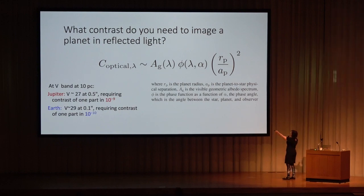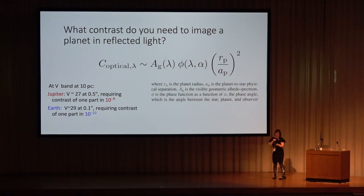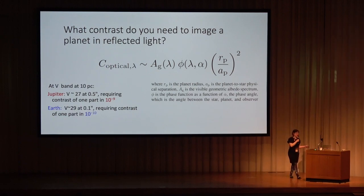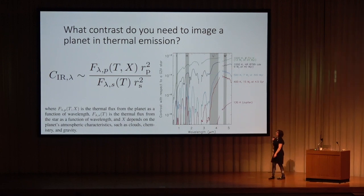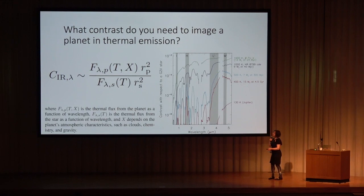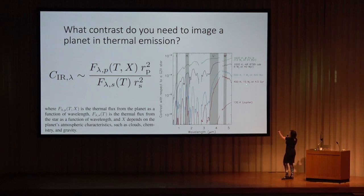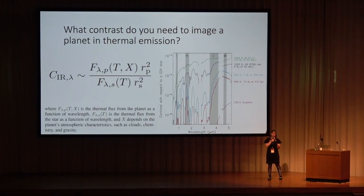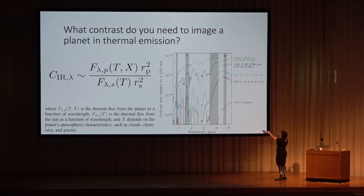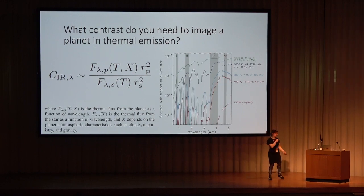We can't achieve that reflected-light contrast yet. What we can do right now is image planets in their thermal emission — their own self-luminosity. Looking at known planets like Beta Pic b and HR 8799's four planets, and considering their contrast around a G star primary, we are quite sensitive to young giants. We need to push down to higher contrast to start getting to cooler, solar-system-like planets.